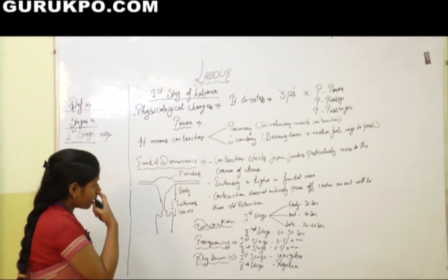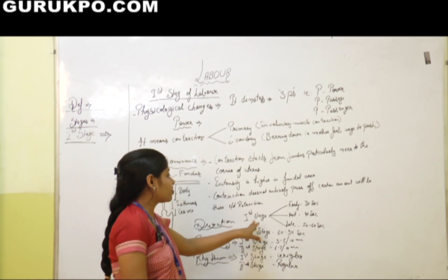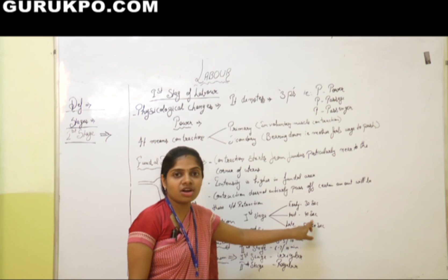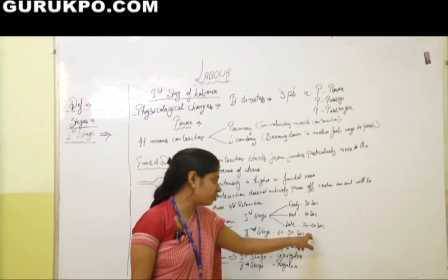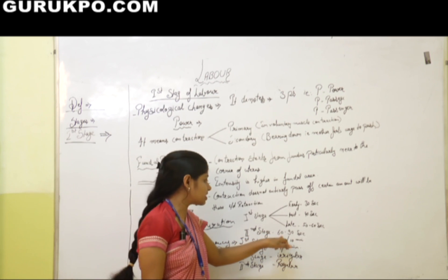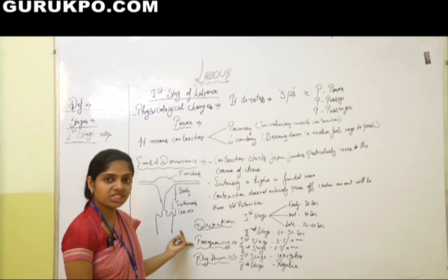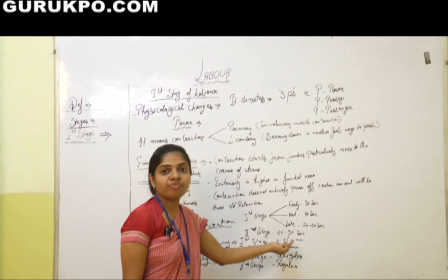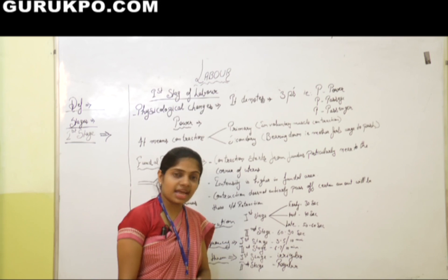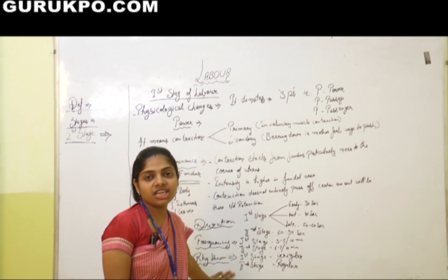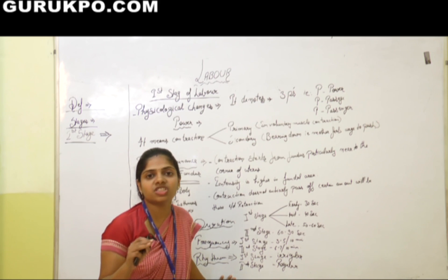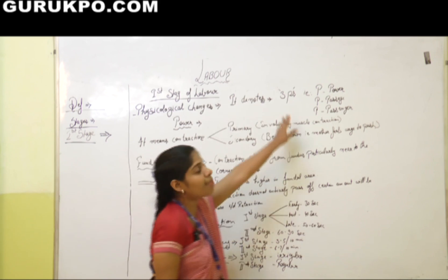The duration of contractions in the first stage: early — 30 seconds, mid — 40 seconds, later — 50 to 60 seconds. In the second stage, contractions last 60 to 90 seconds. The frequency in the first stage is 3 to 5 per 10 minutes; in the second stage, 6 to 7 per 10 minutes. In the first stage contractions are irregular; in the second stage they are regular and expulsive.